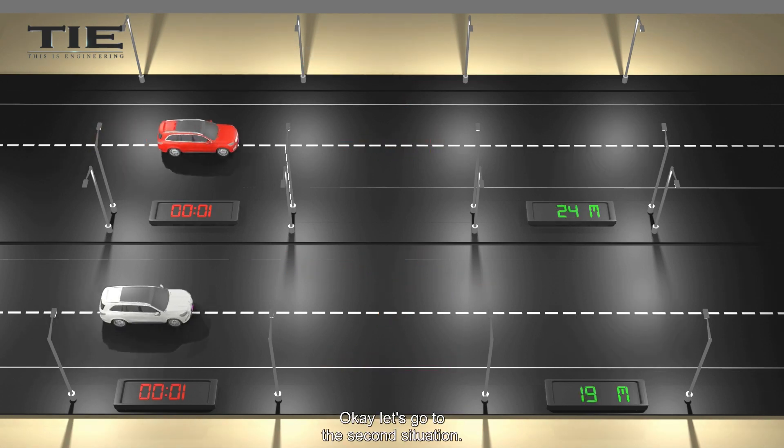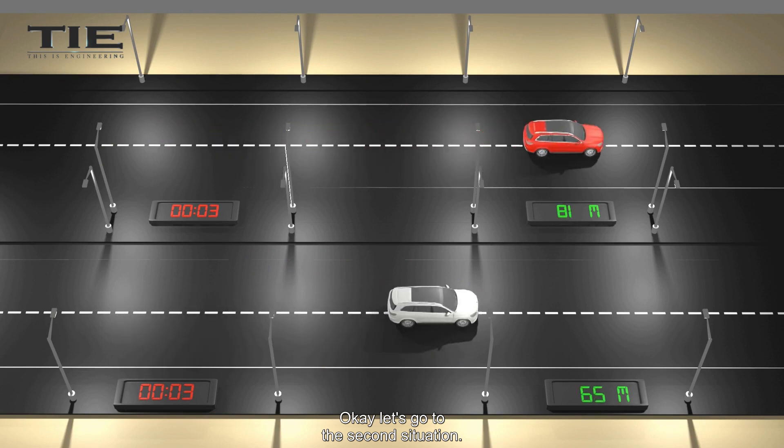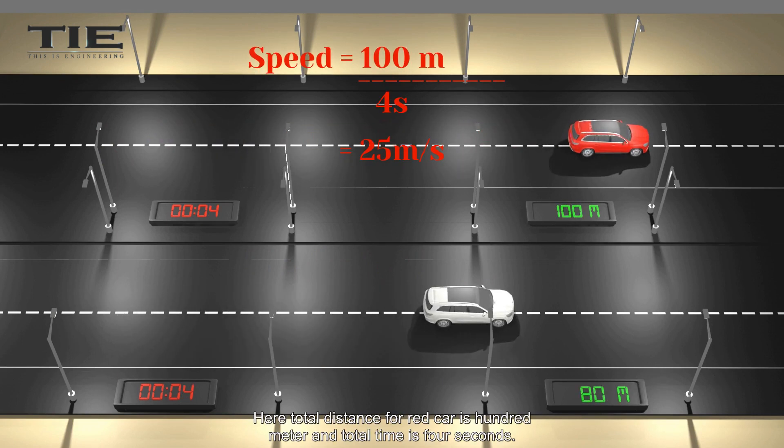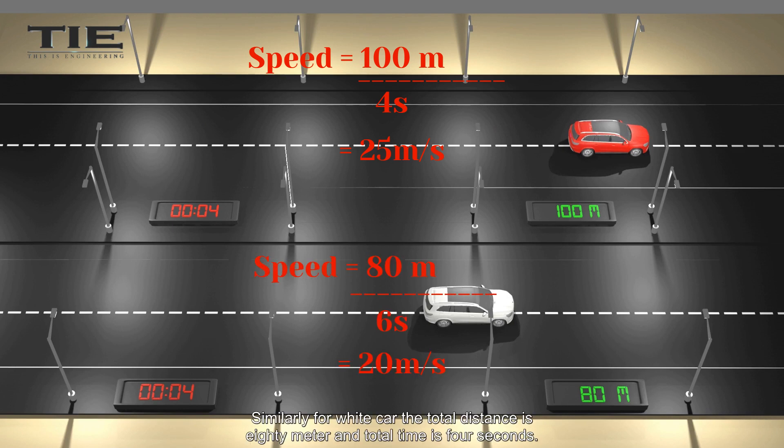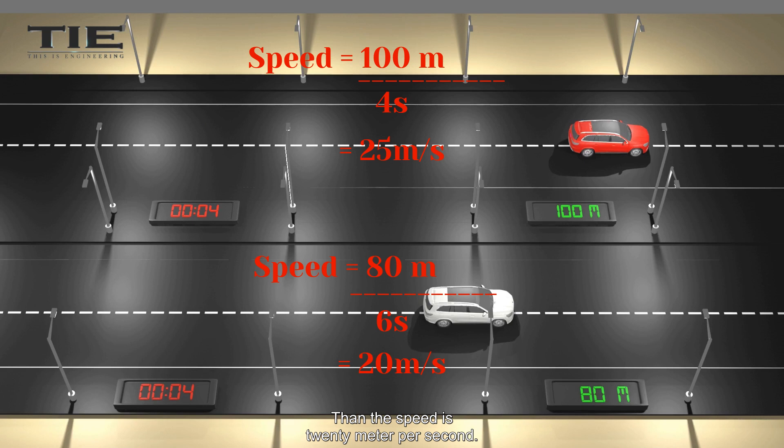Okay, let's go to the second situation. Here, total distance for red car is 100 meter, and total time is 4 seconds. Then the speed is 25 meter per second. Similarly, for white car, the total distance is 80 meter, and total time is 4 seconds. Then the speed is 20 meter per second. Here too, our analysis right. Red car is faster than white car.